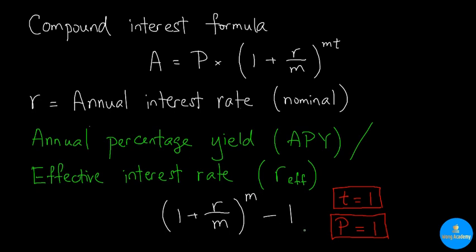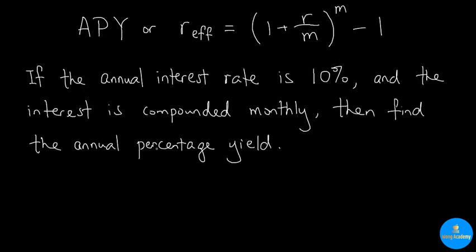Now that we understand the formula, let's take a look at some examples. If the annual interest rate is 10% and the interest is compounded monthly, in order to find the APY, we should apply the formula directly.